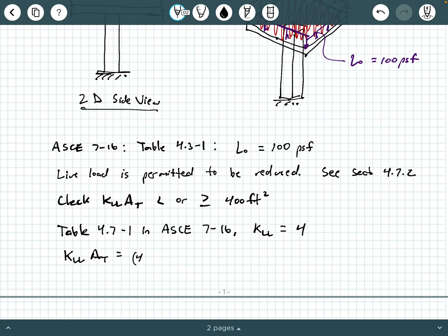So what we can do now is compute K_LL times A sub T. Of course, that's 4 times 400 square feet. And so what is that going to give us? That's going to give us 1,600 square feet. And since this is bigger than 400 square feet, we can reduce the 100 PSF live load.